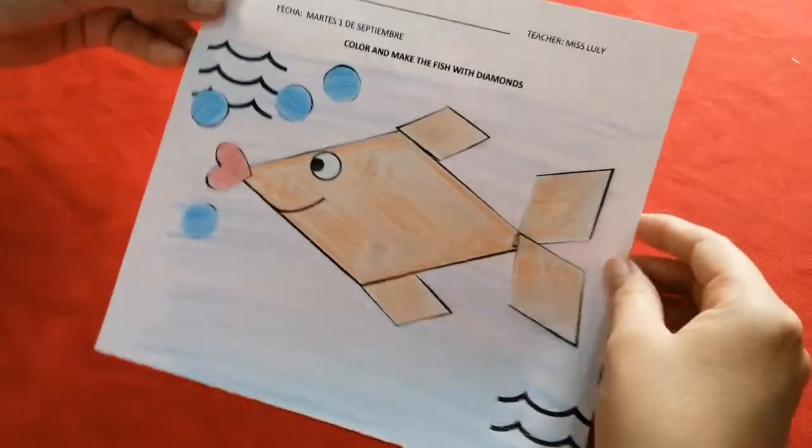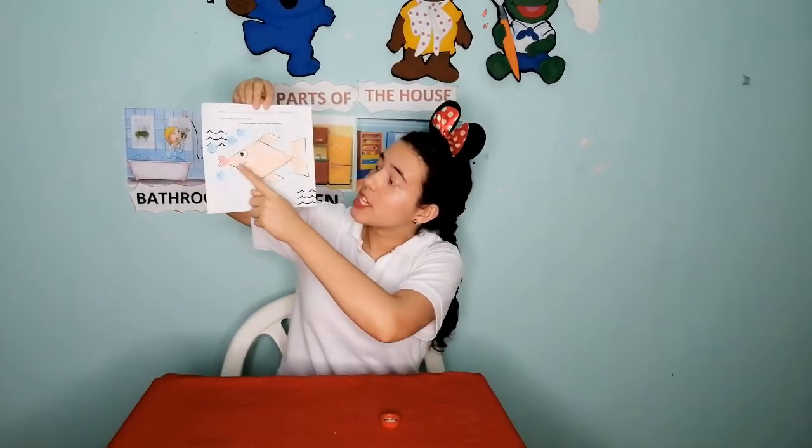We finish. Glug glug glug glug glug with the fish. The fish. We made a fish with diamond. Diamond. Very good, children. Bye-bye. See you tomorrow. Goodbye. Bye. Bye-bye.